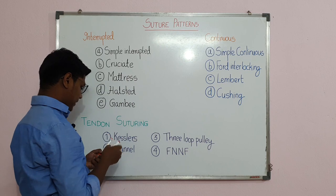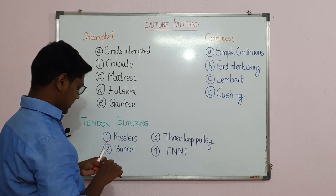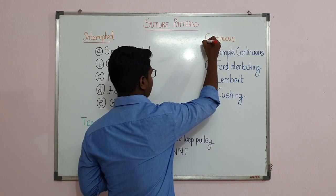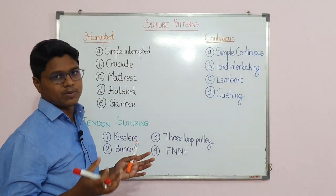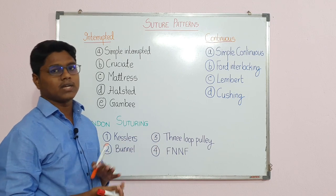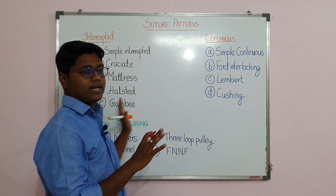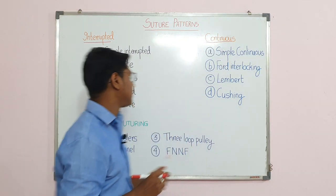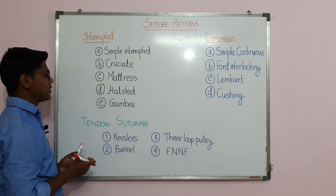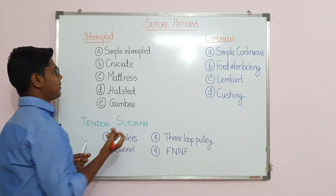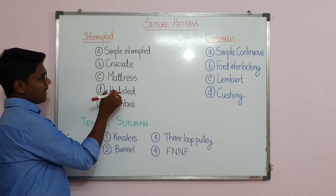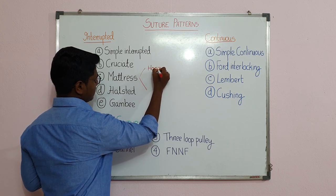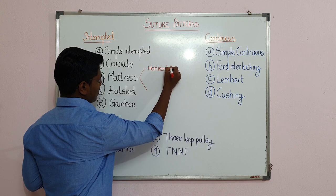Suture patterns are basically divided into two types: the interrupted pattern and the continuous pattern. You will find in many books different types of classification, but in broad terms you can remember it as interrupted pattern sutures and continuous pattern sutures. The interrupted patterns include: simple interrupted, cruciate, and mattress — which is of two types: horizontal and vertical.